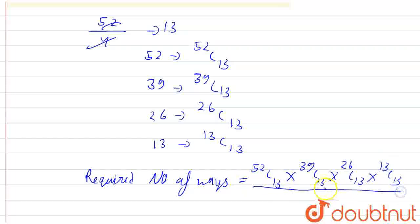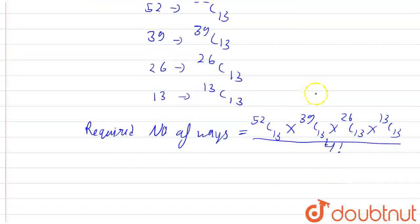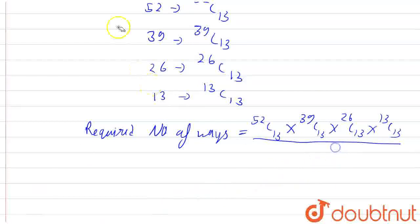Divided by 4 factorial. We divide by 4 factorial because we have to distribute the cards equally, making the arrangement equal among players. That's why we divide this term by 4 factorial.